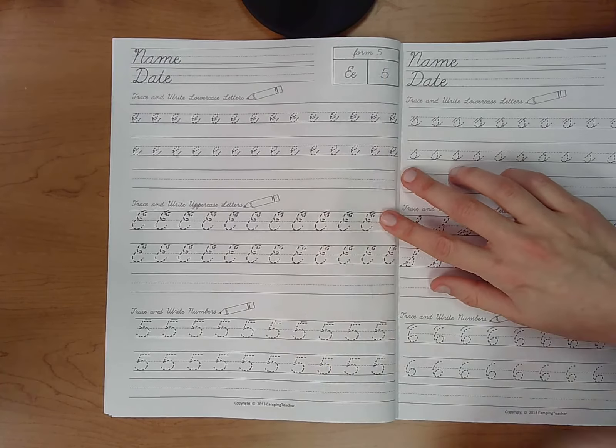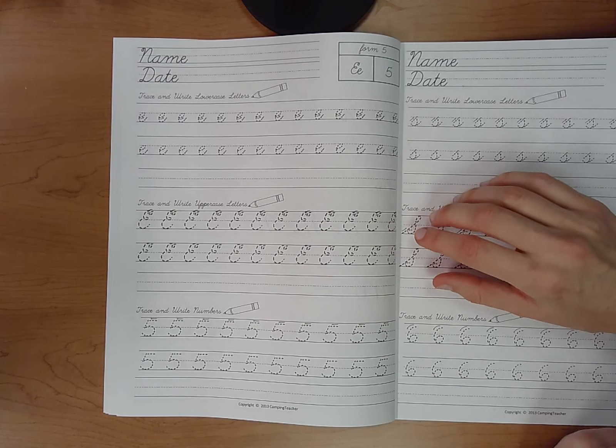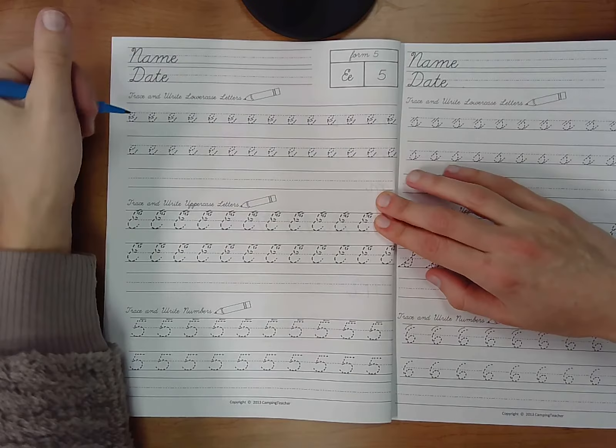Next form is form number five where we will be working on our Es. First things first, lowercase Es.